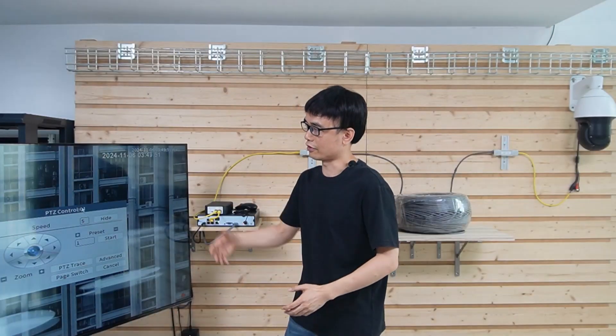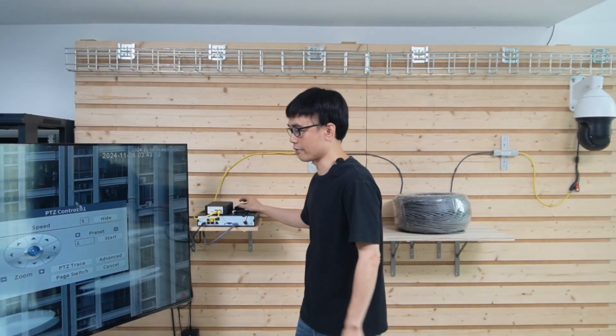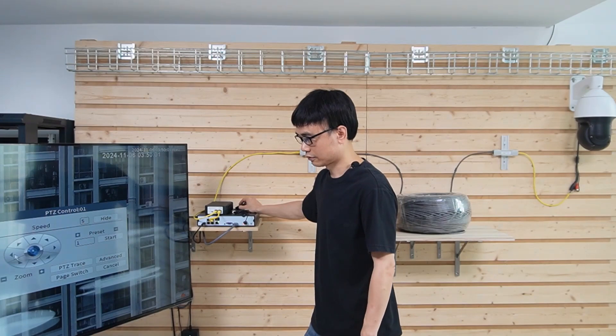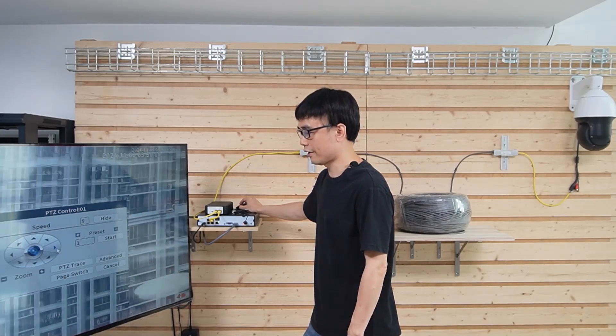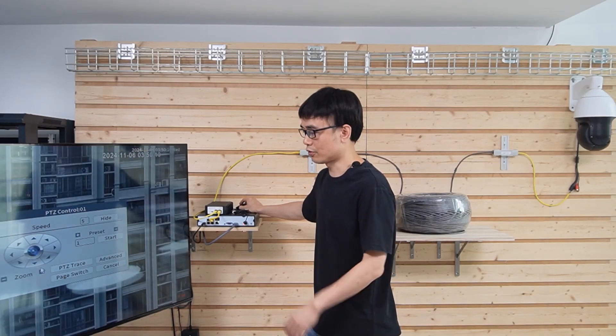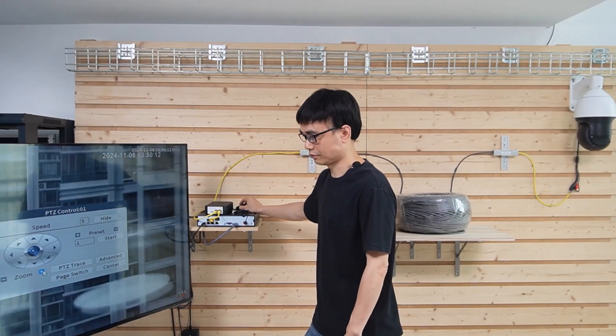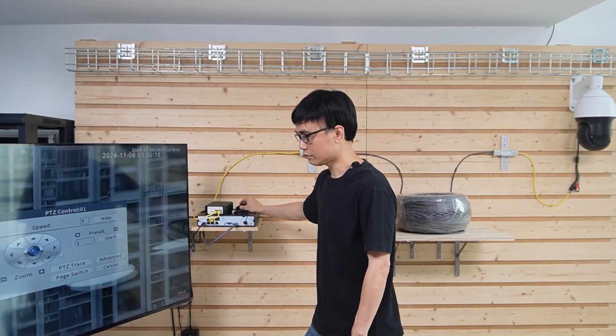Now we have live feed on the monitor. The camera's infrared is on, and the image turns to black and white. Let's control the camera. There's no problem for the panning and tilting. Let's zoom in and zoom out. It's working perfectly.